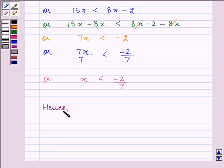Hence the solution set consists of all real numbers less than minus 2 divided by 7. So the solution set is equal to minus infinity to minus 2 divided by 7.